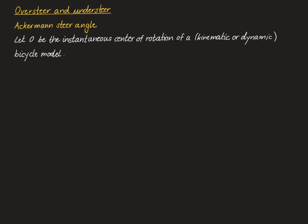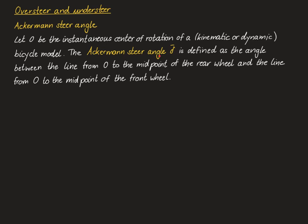Let's begin with the definition of the Ackermann steer angle. Let O be the instantaneous center of rotation of a kinematic or dynamic bicycle model. Any bicycle model as a rigid body always has an instantaneous center of rotation at each point in time, so O is well defined for both models. The Ackermann steer angle, which we denote with delta bar, is defined as the angle between the line from O to the midpoint of the rear wheel and the line from O to the midpoint of the front wheel.